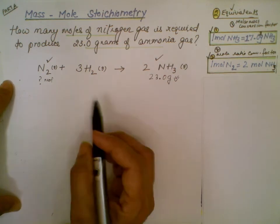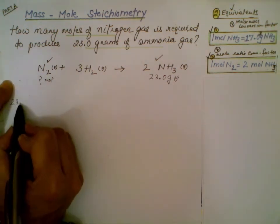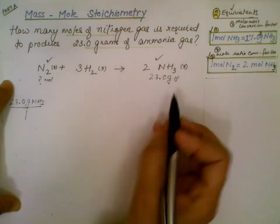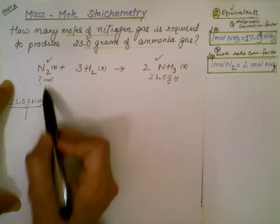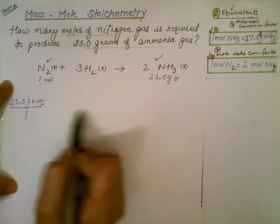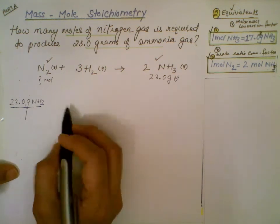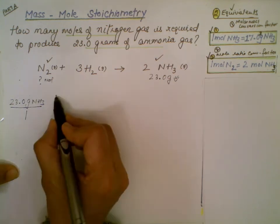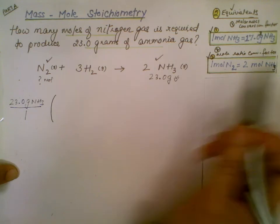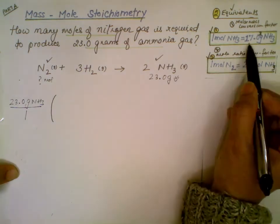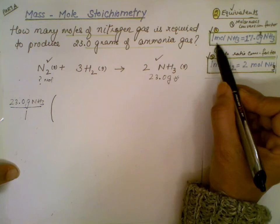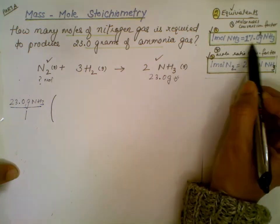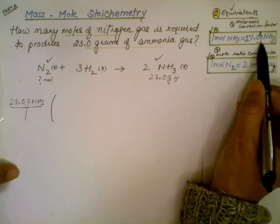Let's start with the given: 23.0 grams of ammonia. We cannot do this problem in one step — we can't convert the mass of one substance directly to the moles of another. We have to go through the moles, using fractions. First, let's convert this mass of ammonia to its moles using the molar mass conversion factor. The molar mass of one mole of ammonia is 17.03 grams, and we get that from the periodic table.